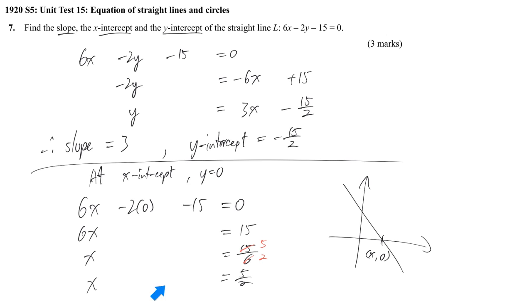If you just simply write x is equal to something, it's not clear enough. So you better say x-intercept is equal to 5 over 2.